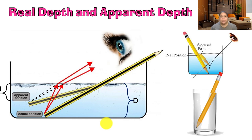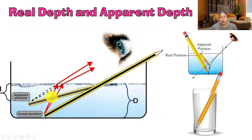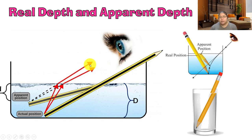This is an example diagram showing real depth and apparent depth. A real pencil is placed inside water. The light ray must start from the actual position - from the end of the pencil - and travel up to the surface of the water. Because of the different density, the direction of the ray bends away from the normal, since air is less dense and water is denser.